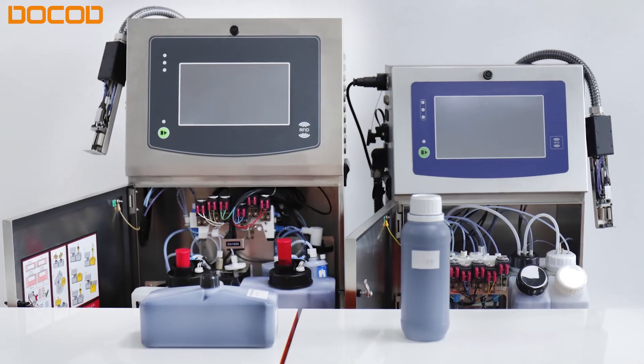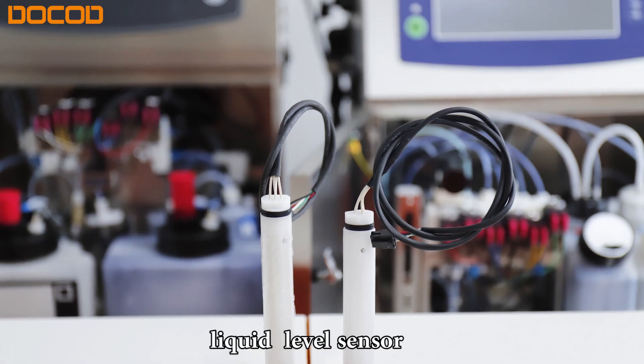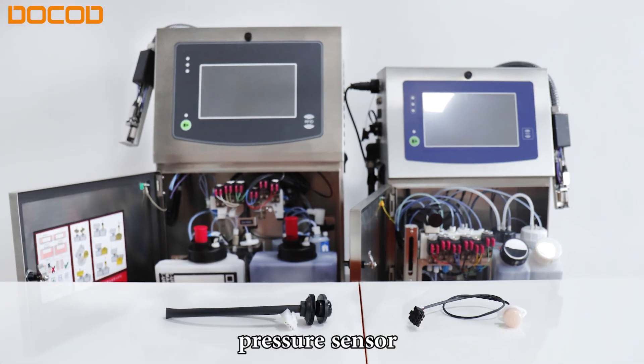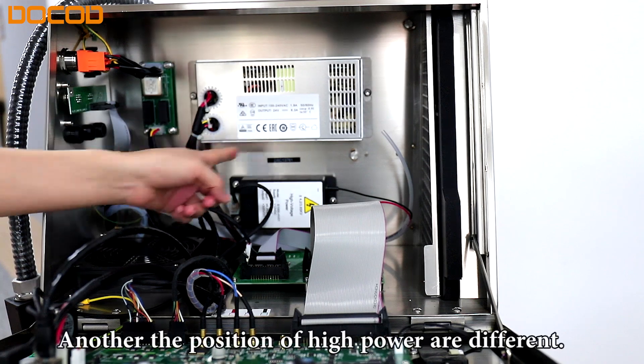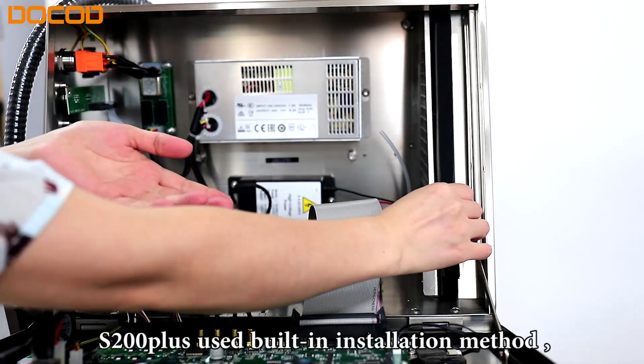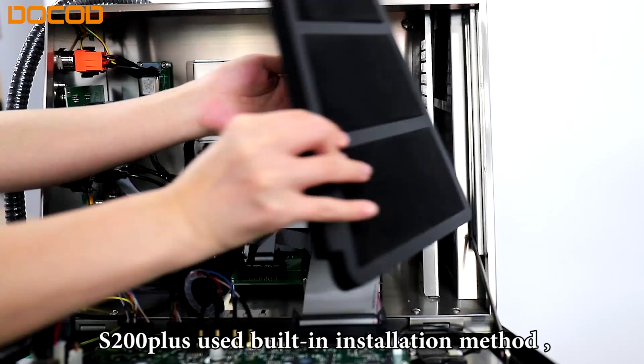The ink tank with flow meter, liquid level sensor, ink temperature sensor, pressure sensor, and other component positions are different. X200 Plus uses the built-in installation method.